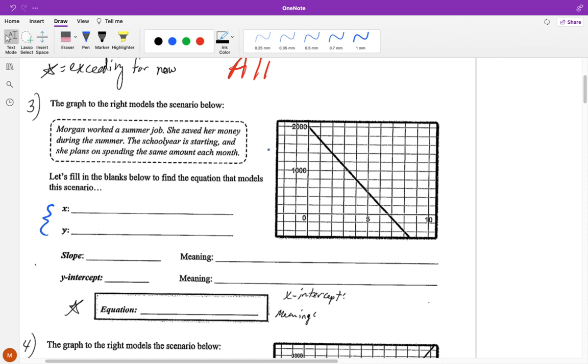So we don't see anything labeling our X and Y axes. That's what we're doing here. We're saying, well, what does the X axis represent? What does the Y axis represent? So Morgan worked a summer job. She saved her money during the summer. The school year is starting and she plans on spending the same amount each month.